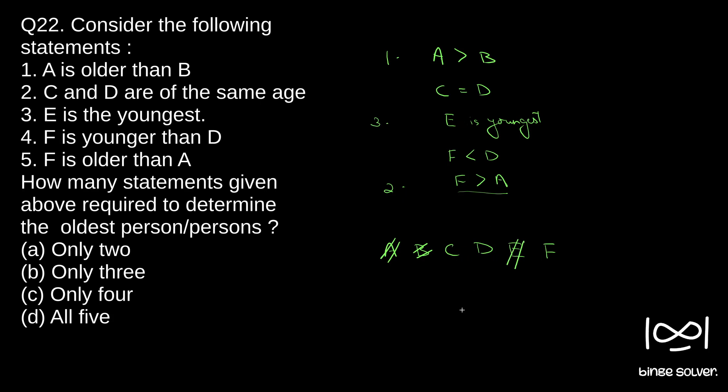Now C, D, or F can be old. If you see, F is less than D. From this statement, we know that D is the older among F and D. We can use that to eliminate F as an option. Now we are left with C and D. Either C or D can be older.